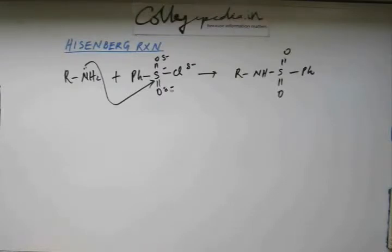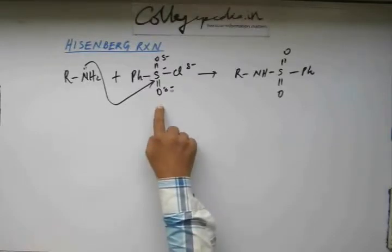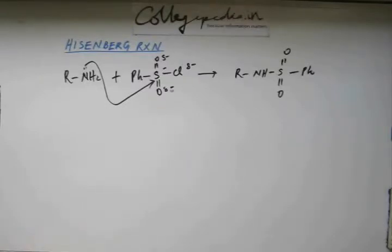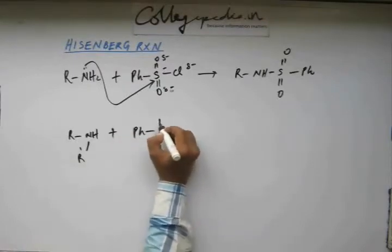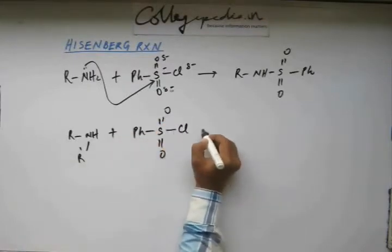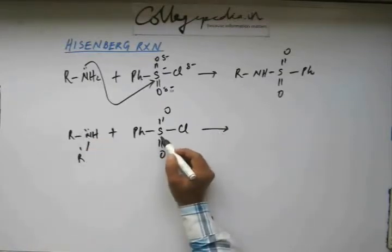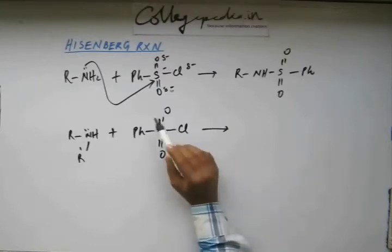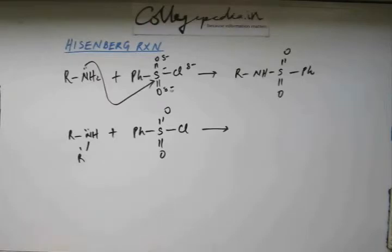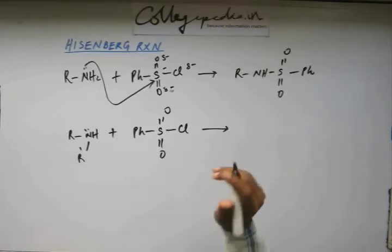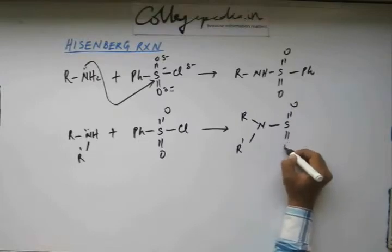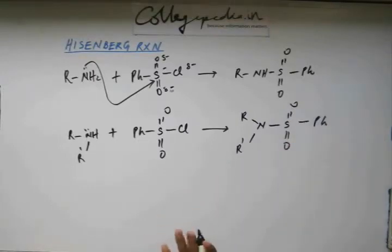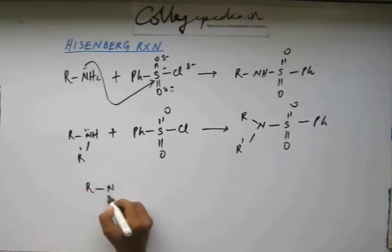A first degree amine will show reaction with phenyl sulfonyl chloride, and so will a second degree amine. If you have a second degree amine and make it react with phenyl sulfonyl chloride, the nitrogen will act as a nucleophile, attack the sulfur, S double bond O will break, Cl minus will come out, and S double bond O will be regenerated. The plus charge on nitrogen goes away when H plus leaves. So the reaction will occur with both first and second degree amines, but not with third degree amine.